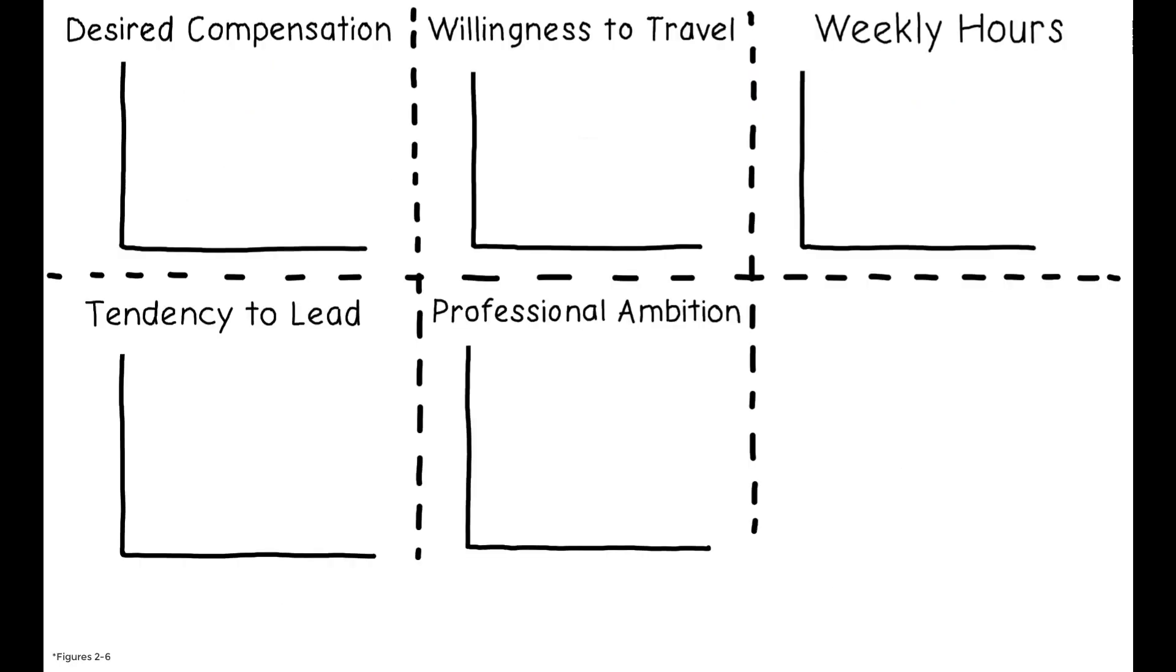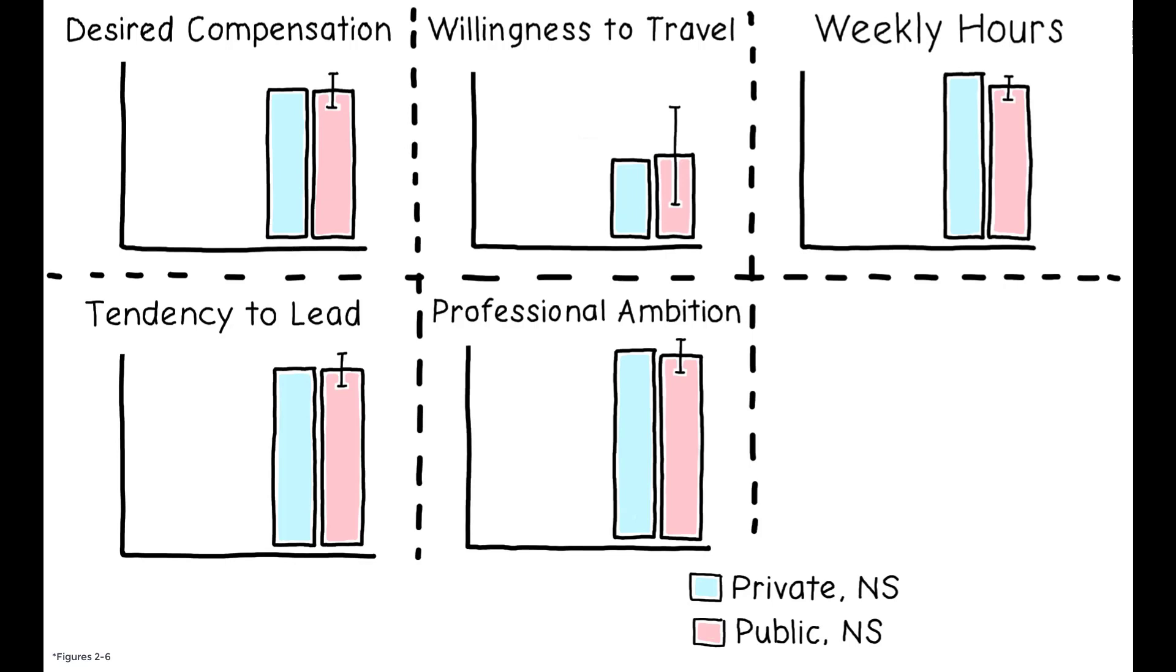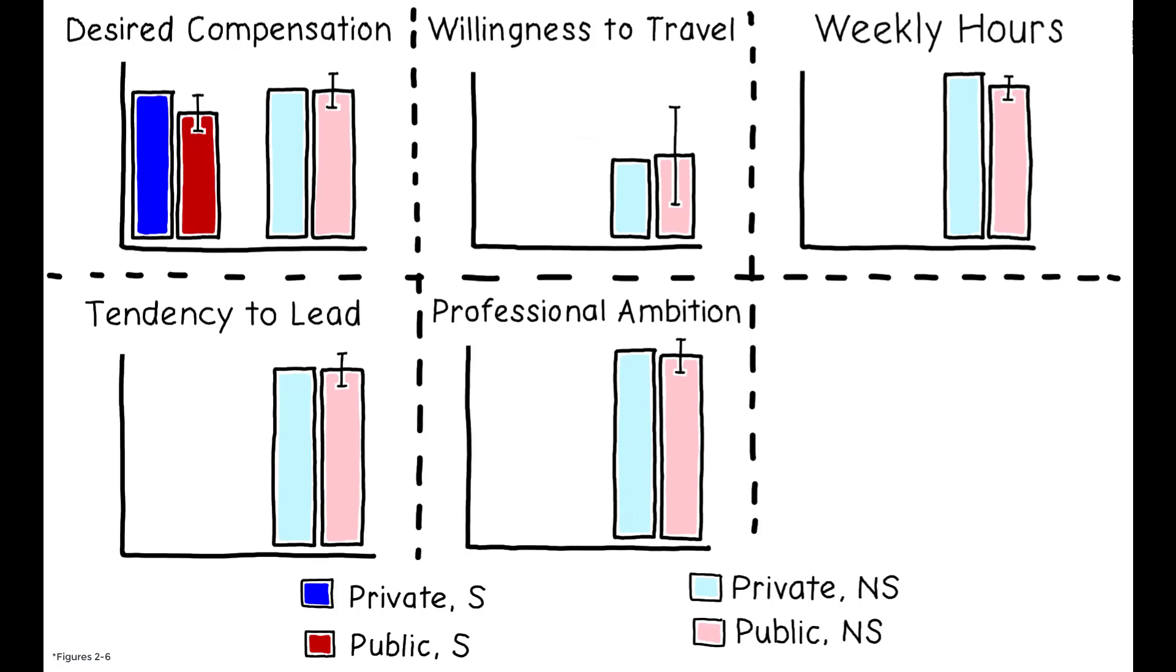The results show that for the most part, non-single women provided similar answers regardless of whether they received the private or public survey. The picture looks very different, however, for single women, who report lower desired compensation, less willingness to travel, and fewer desired weekly hours of work when they expect their answers to be public.